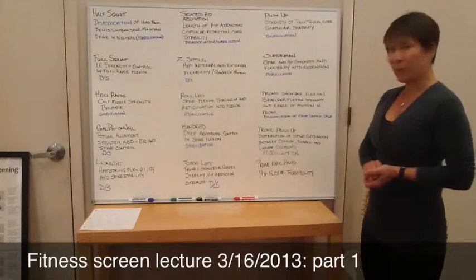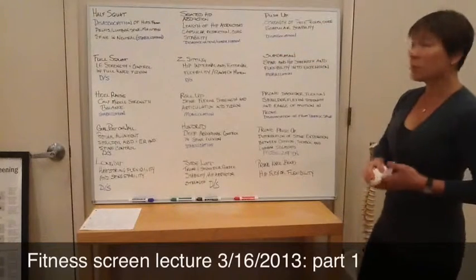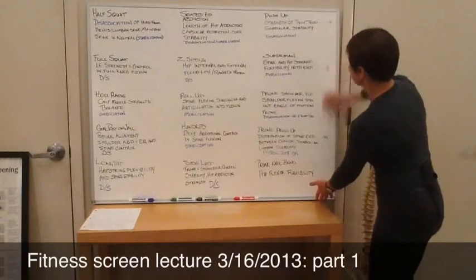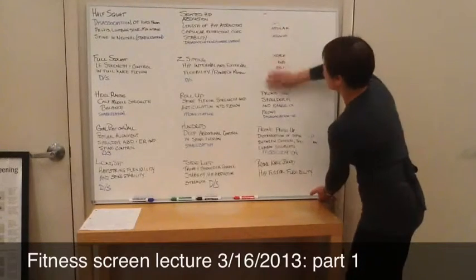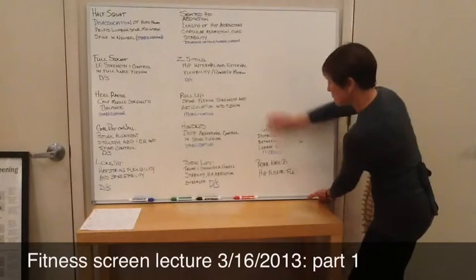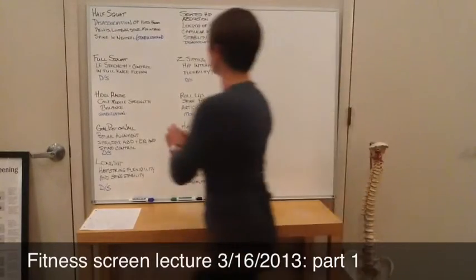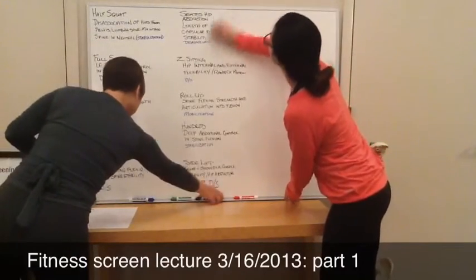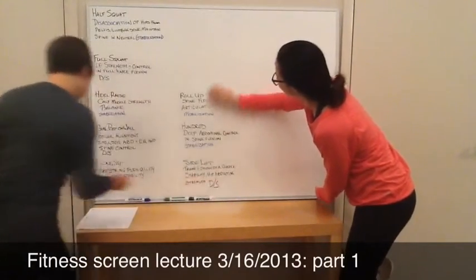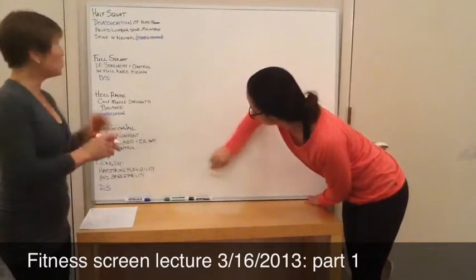Now that everyone has had a chance to look at this, write it down and use it as a format. We're going to erase the last two columns and start to look at how the movement sequences you've learned fit into these classifications. We're going to apply our six principles to these tests. For pretty much all of these, you're going to have core control and axial elongation — and in every single one, you're going to have breathing. So just assume B, CC, and AE are already written in.